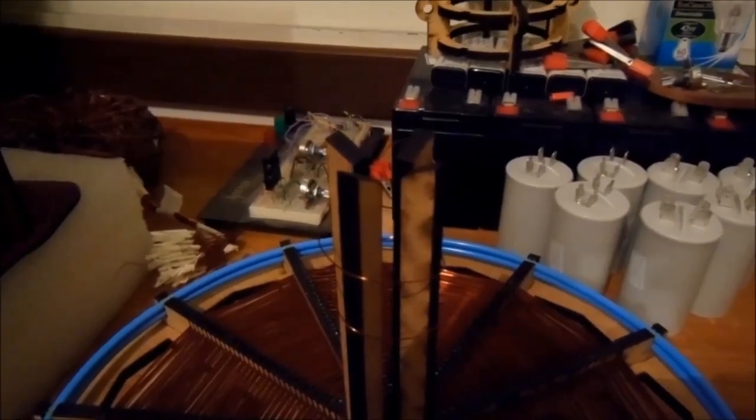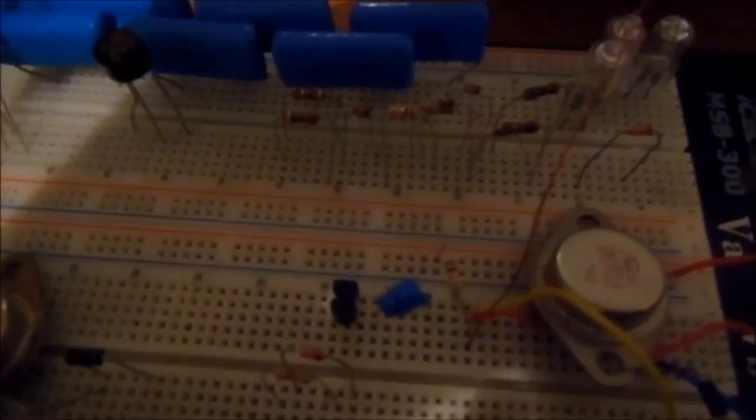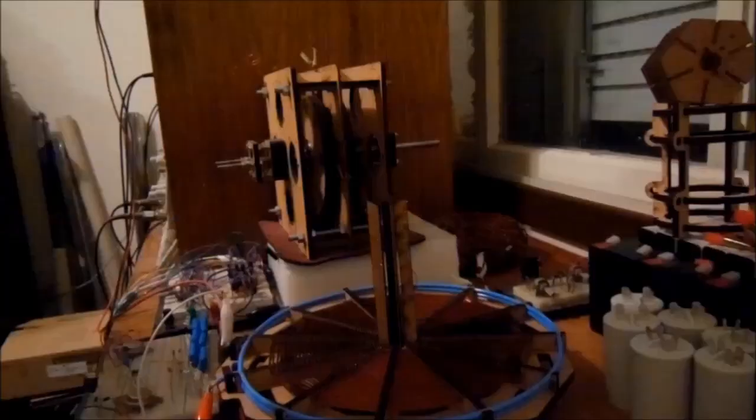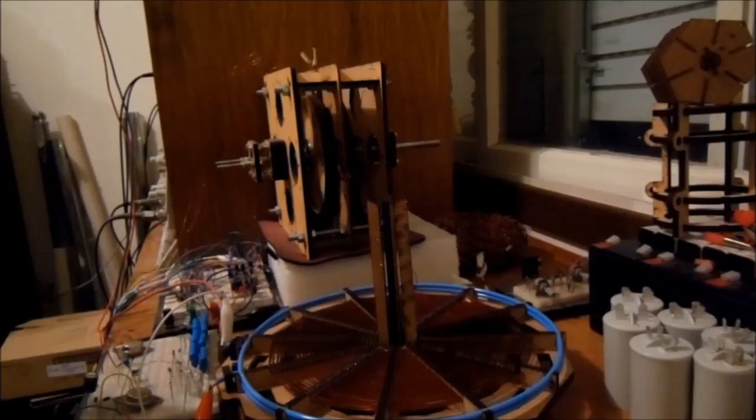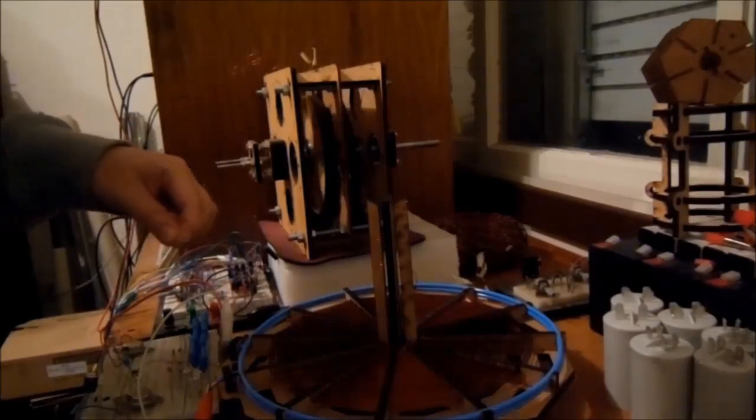And this coil for this test is connected to a standard Slayer Exciter using a 10 kilohm resistor and a 2N3055 transistor. And let's see how this coil is going to perform. Now I'm supplying 22 volts to the Slayer Exciter and I'm consuming 100 milliamps. So let's check the strength and the range of the wireless energy transfer.